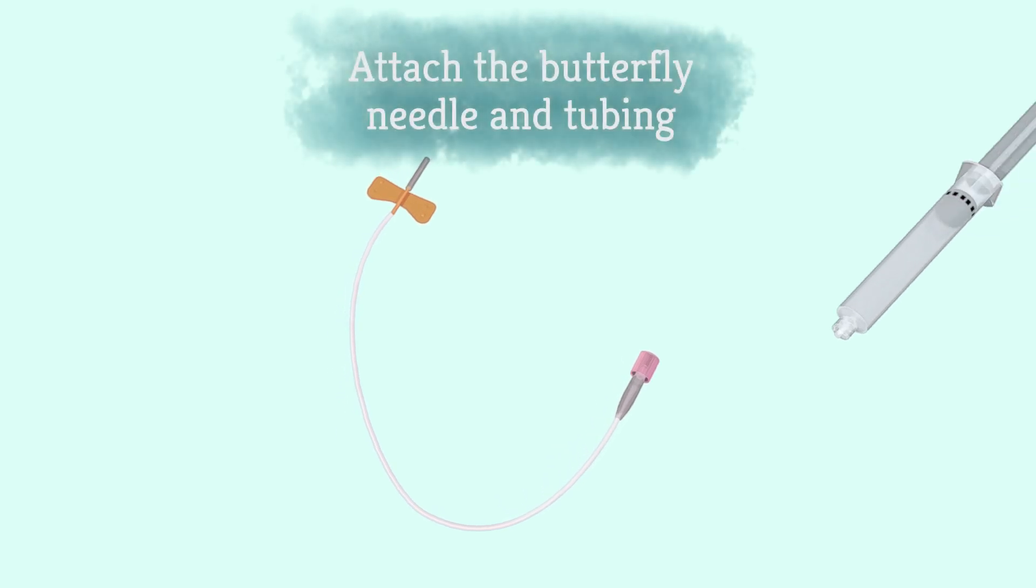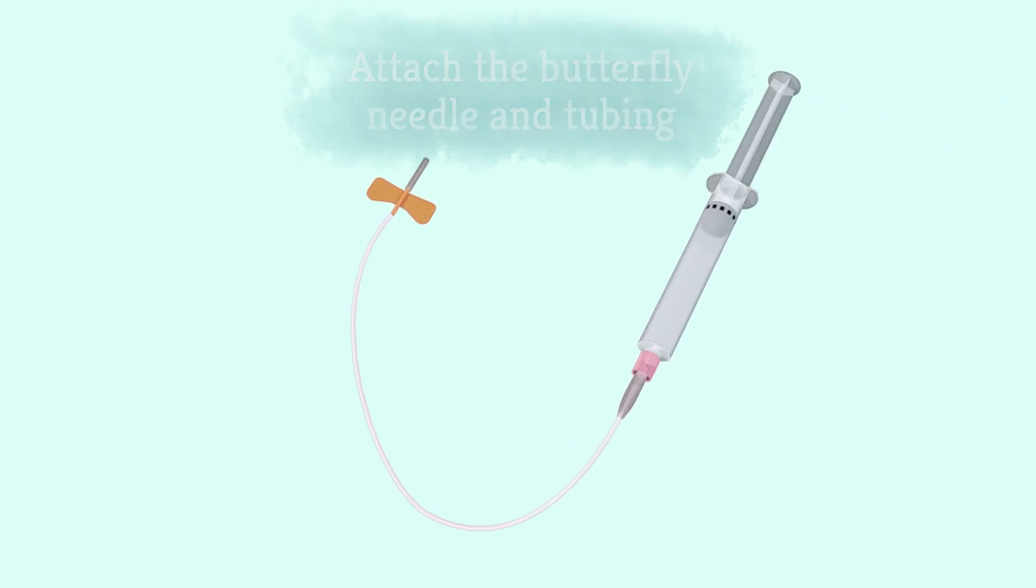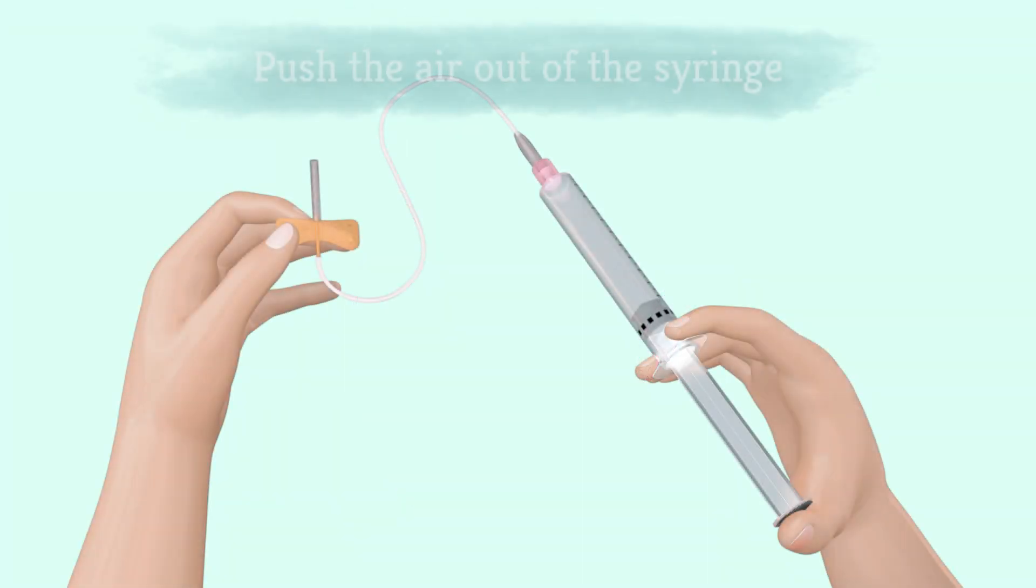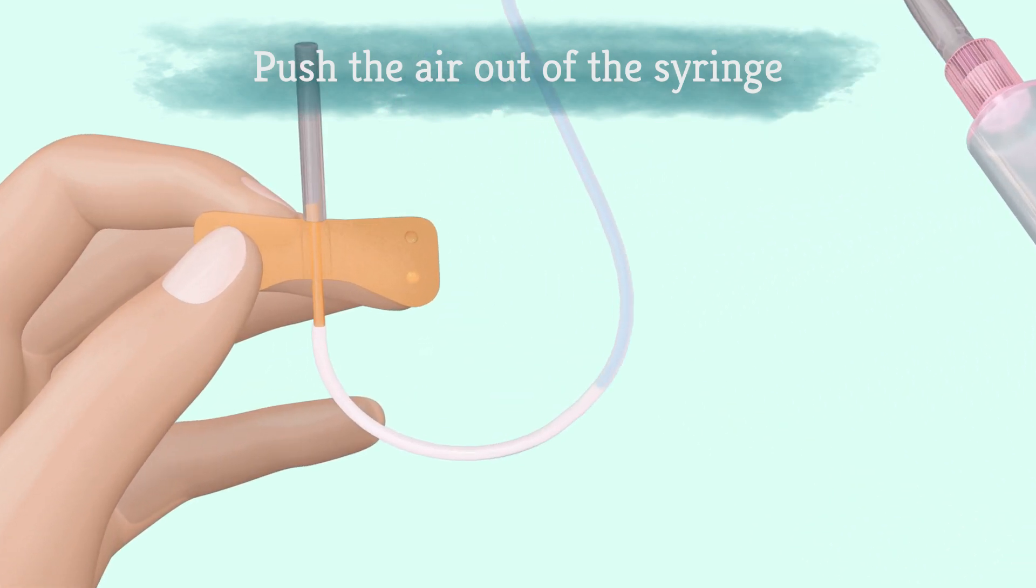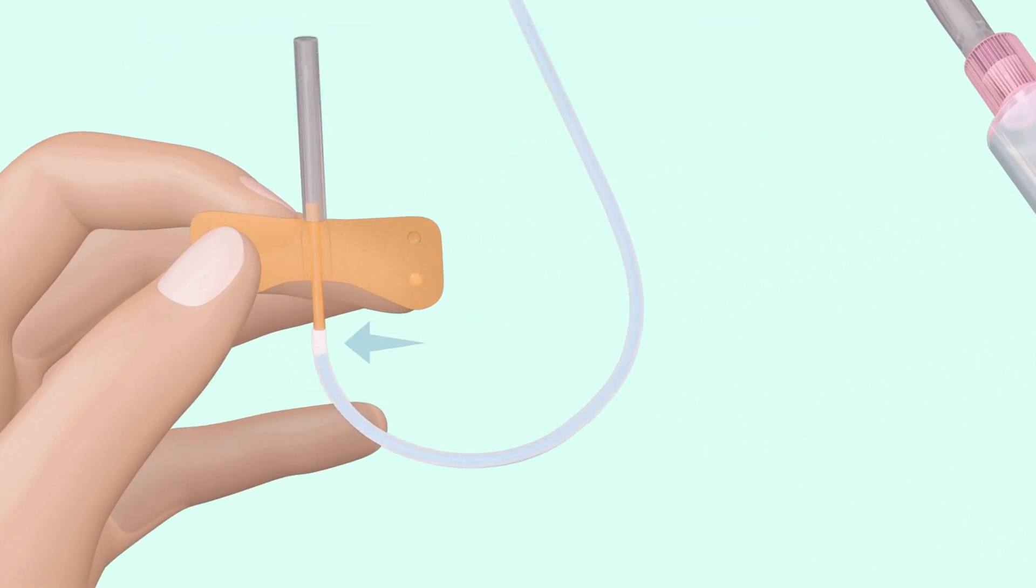Attach the butterfly needle and tubing to the syringe of Factor. Push the plunger on the syringe so that the Factor goes almost to the end of the tubing. This pushes the air out of the syringe.